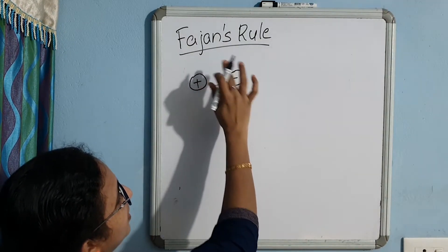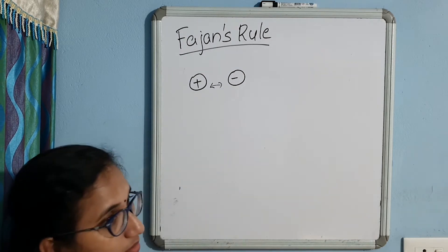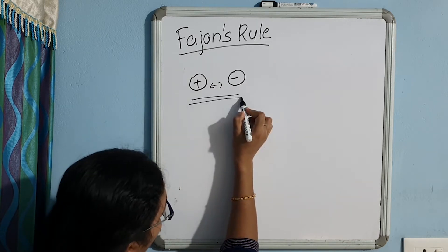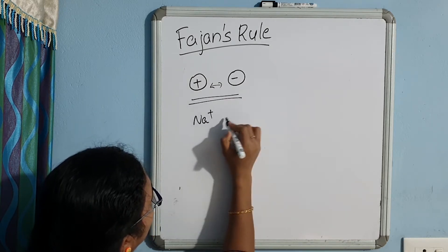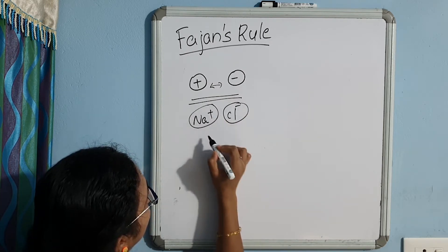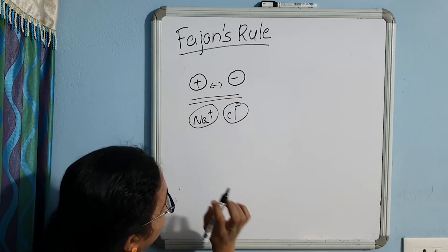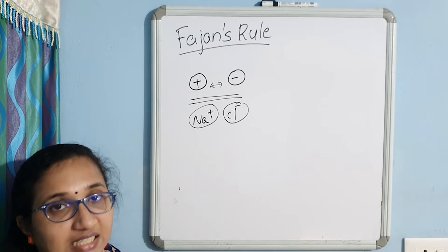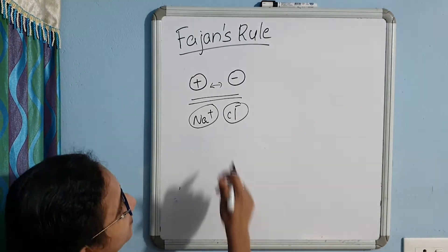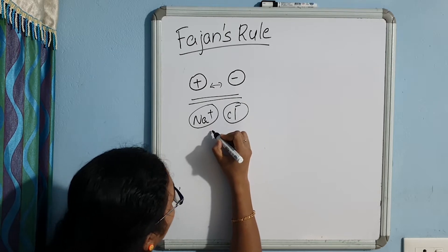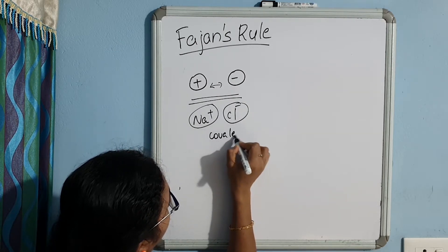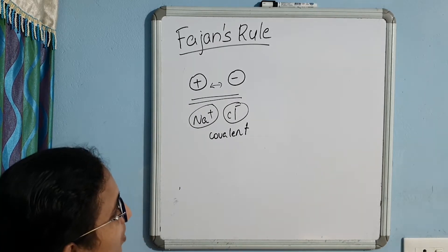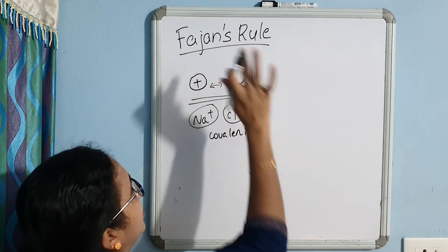Fajan's Rule gives an idea about the partial covalent character of ionic bonding. That means in ionic compounds, even though we expect the compound to be purely ionic in nature, there is some sort of covalent character or sharing character — since a covalent bond is formed by the sharing of electrons — there comes a partial covalent character in ionic bonding.